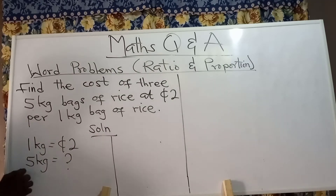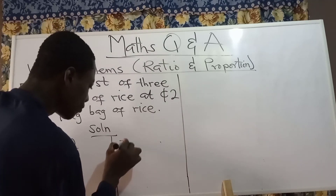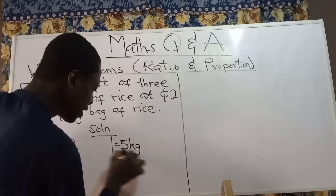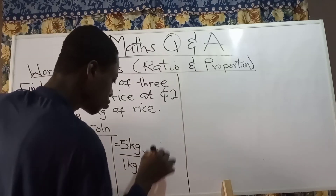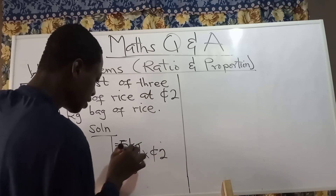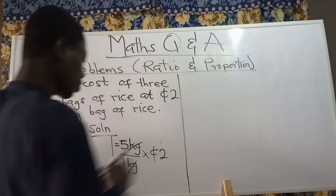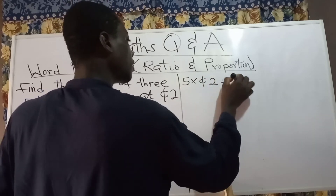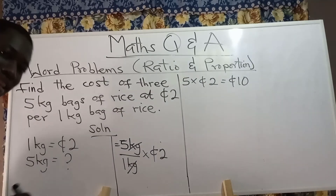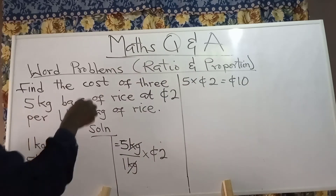With a direct proportion question, you divide the new quantity by the given quantity and multiply it by the given amount. So we have five kg divided by one kg of rice, then multiplied by two cities. The kilograms cancel out: five divided by one gives five. Five multiplied by two cities gives ten cities. But is that the answer? No — in the question, you are asked to find the cost of three five kg bags of rice.